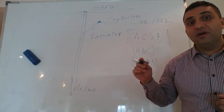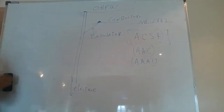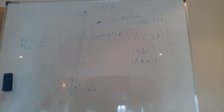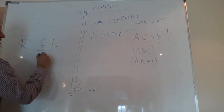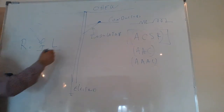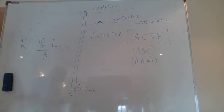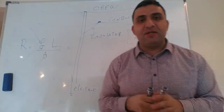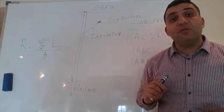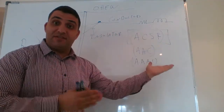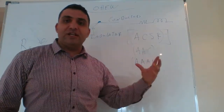Going back to the basics of physics, resistance is equal to resistivity rho multiplied by length l, divided by cross-sectional area A: R = ρl/A. Temperature is very important here because when temperature changes, the resistivity of the conductor changes — whether it's aluminum, copper, or steel. The role of the transmission line is to transmit current from point A to point B.